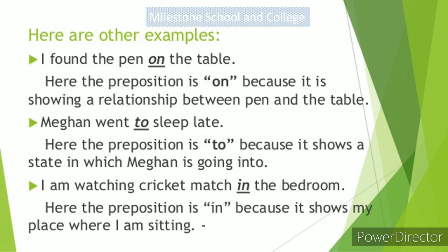Here are other examples of preposition. First example: 'I found the pen on the table.' Here, the preposition is 'on' because it is showing a relationship between pen and the table. By using preposition, we can understand the relationship of pen and the table. Next example: 'Megan went to sleep late.' Here, the preposition is 'to' because it shows a state into which Megan is going. Final example: 'I am watching a cricket match in the bedroom.' Here, preposition is 'in' because it shows my place where I am sitting. By using on, to, and in, we can make relationships between two nouns in any particular sentence.